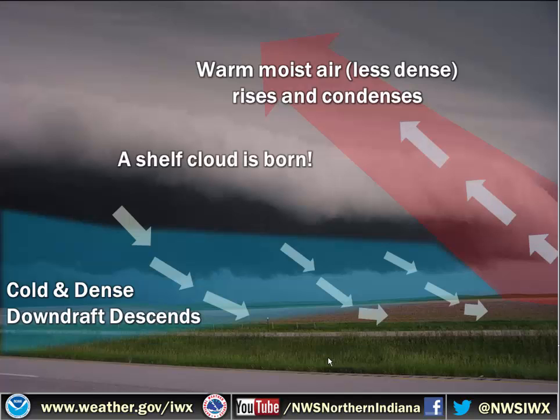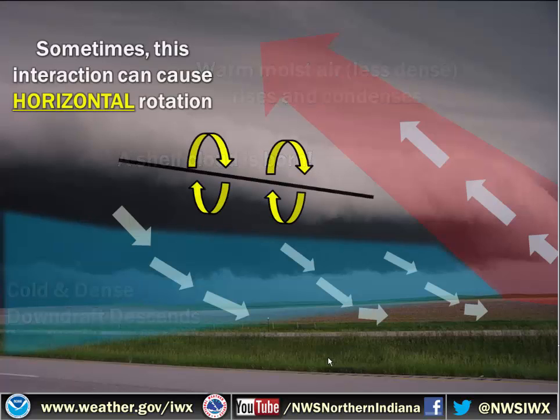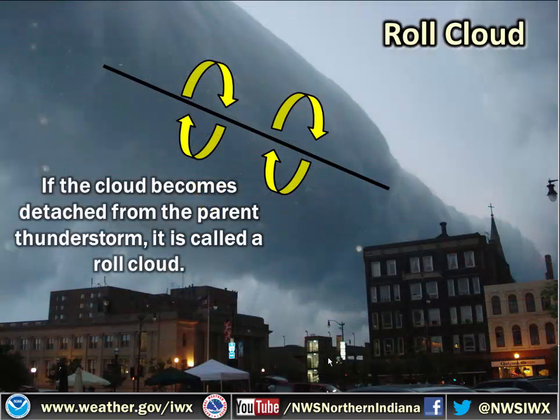Sometimes that interaction between the downdraft and the updraft can cause some kind of horizontal rotation — now it's horizontal, not vertical. When this happens, sometimes it can be so much that it actually detaches itself from the parent thunderstorm and rolls off on its own. That's when we call it a roll cloud, again signifying the more extensive winds.